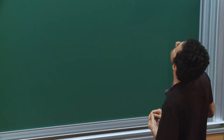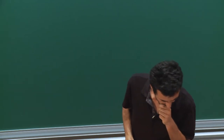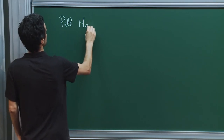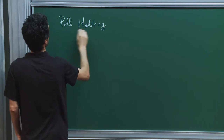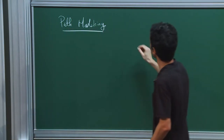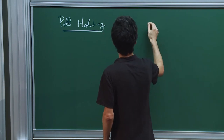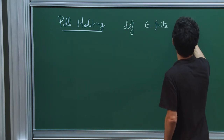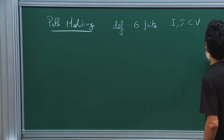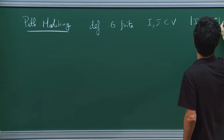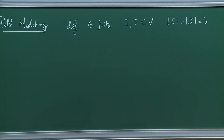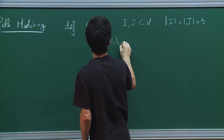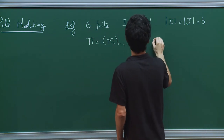To explain the first result on percolation on Z², we introduce something called a path matching. You have a finite graph G and two subsets I and J of vertices having the same cardinality, call it B. A collection of paths Pi is a path matching.